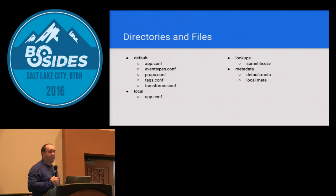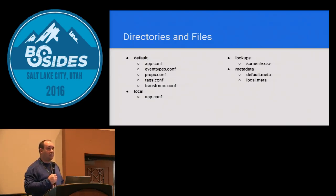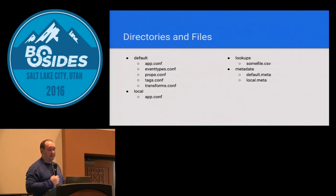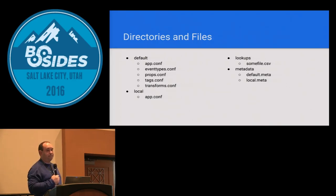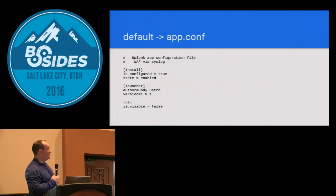A custom application is primarily made up of these directories and the files within them. The local, app.conf, and metadata files I'm not going to cover today for brevity — those are basically just metadata about your app: what it's called, who wrote it, that kind of thing. I'm going to focus on the content under the default directory and the lookups directory, because that's really where the rubber meets the road with custom apps.